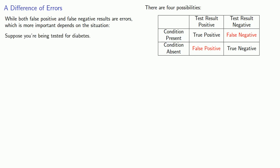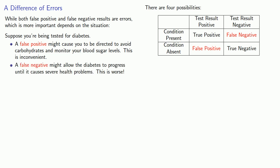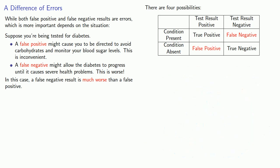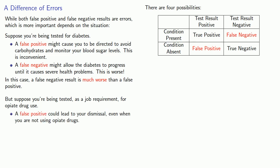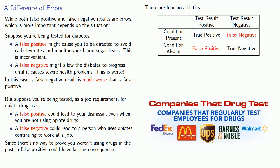For example, suppose you're being tested for diabetes. A false positive result might cause you to be directed to avoid carbohydrates and to monitor your blood sugar level — this is inconvenient. On the other hand, a false negative result might allow the diabetes to progress until it causes severe health problems — this is worse. In this case, a false negative is much worse than a false positive. On the other hand, suppose you're being tested as a job requirement for opiate drug use. A false positive could lead to your dismissal even when you're not using opiates, and a false positive could have lasting consequences since there's no way to prove you weren't using drugs in the past.